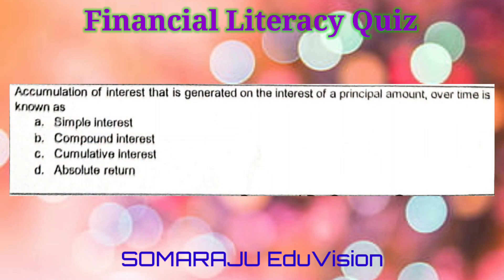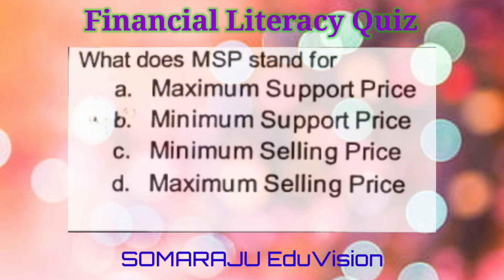Question number four: Accumulation of interest that is generated on the interest of a principal amount over time is known as A. Simple interest, B. Compound interest, C. Cumulative interest, D. Absolute return. The correct answer is B. Compound interest.